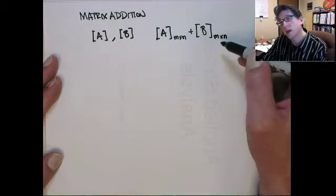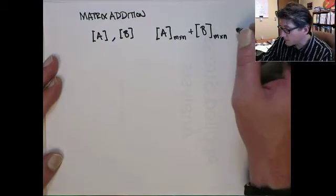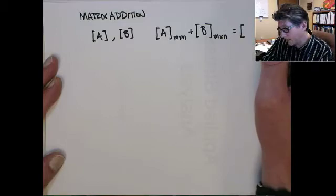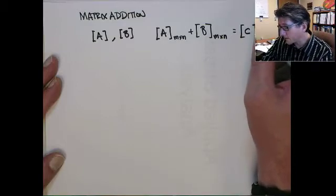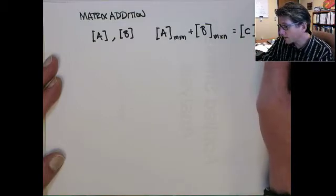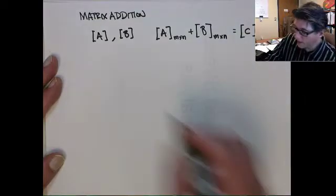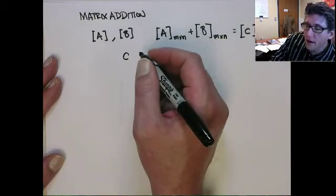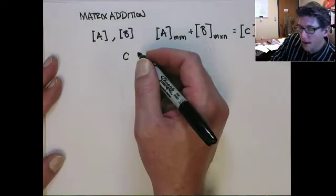So, if they're not the same size, you can't add them together. They need to be of the same size to add together. When you add two matrices together, you'll get a third matrix, which will also be of the same size. And the operation is such that you just add element by element.